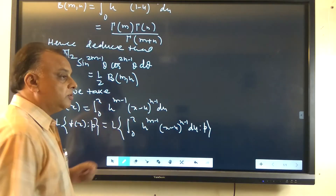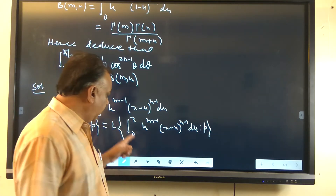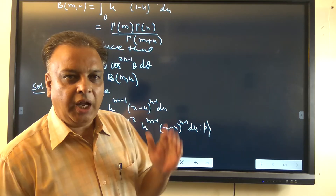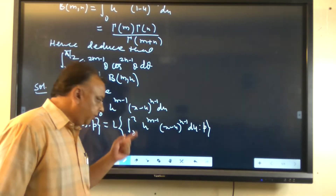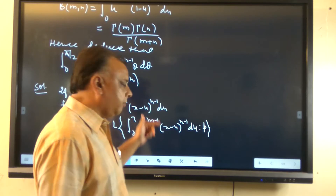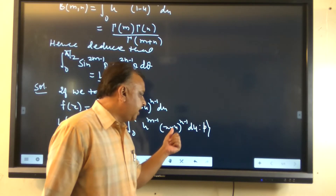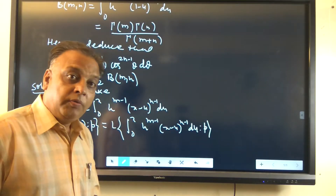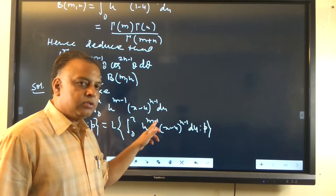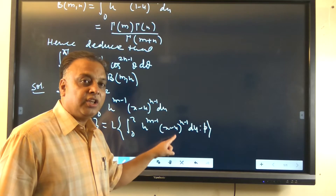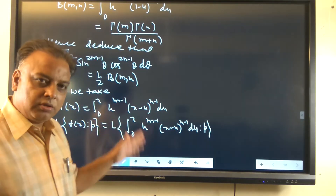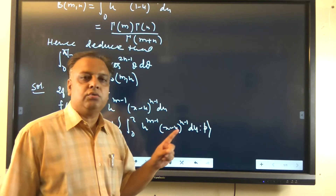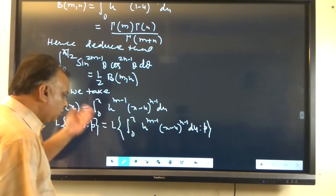The convolution theorem states that the Laplace transformation of the integral from 0 to x of f(u) times g(x-u) du equals F(p) times G(p). Here, if we take f(u) as u^(m-1) and g(x-u) as (x-u)^(n-1), then comparing with the convolution theorem, we find that f(x) = x^(m-1) and g(x) = x^(n-1).